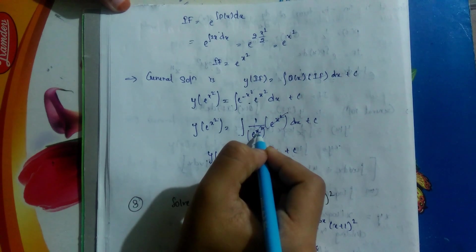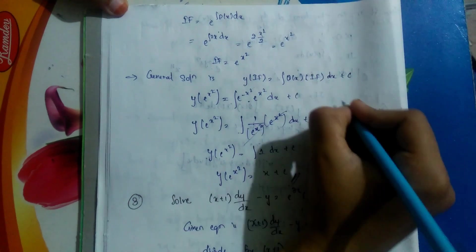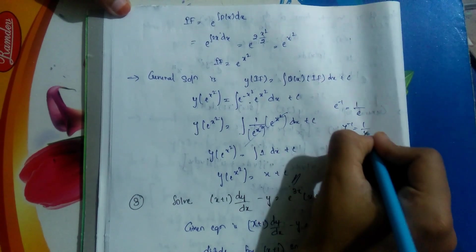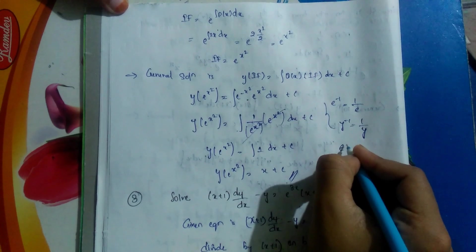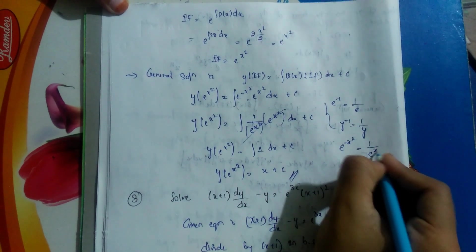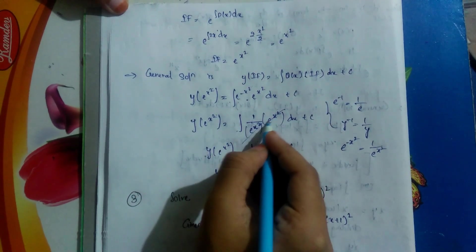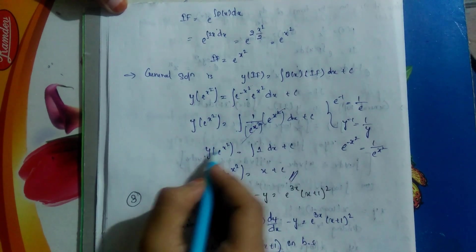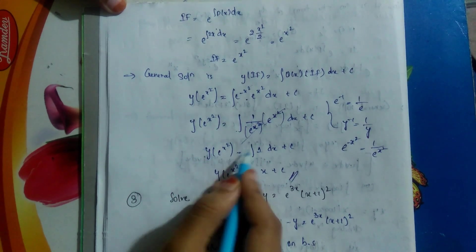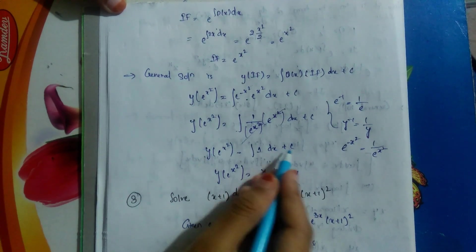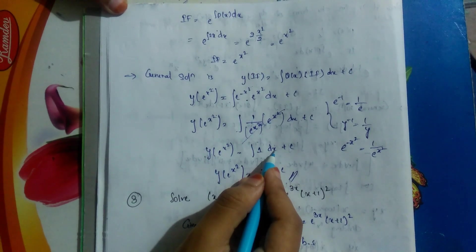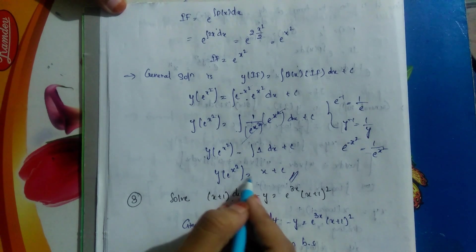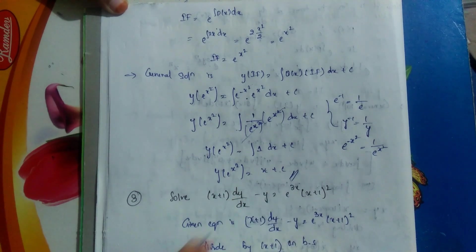Now e^(x²) times e^(−x²): since e^(−x²) can be written as 1/e^(x²), the product e^(x²) · (1/e^(x²)) equals 1. So y·e^(x²) equals ∫1 dx plus c, and the integral of 1 with respect to x is x. Therefore y·e^(x²) equals x plus c is the general solution.